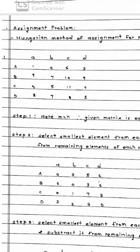So you can see here this is the problem given to you, where it is a 4 by 4 matrix with the elements: A row has 1, 4, 6, 3; B row has 9, 7, 10, 9; C row has 4, 5, 11, 7; and D row has 8, 7, 8, 5.